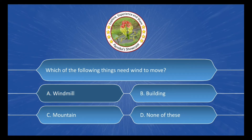Next question options are: A. Windmill, B. Building, C. Mountain, D. None of these. And the correct answer is Option A. Windmill.